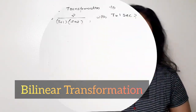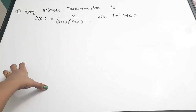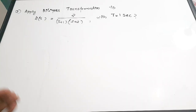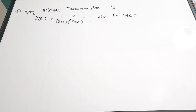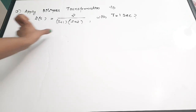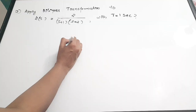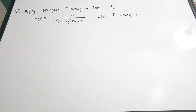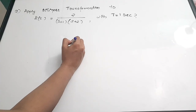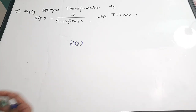In today's video we are going to discuss bilinear transformation. We have already done a video about the Butterworth filter and applying bilinear transformation to convert a transfer function from analog to digital domain. Bilinear transformation and impulse invariance are the two most commonly used methods to convert a transfer function in the analog domain to the digital domain. If a transfer function is given in the analog domain, it will most commonly be in H(s) form — in the Laplace transform domain.